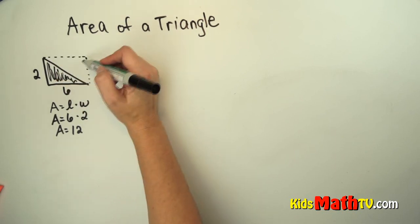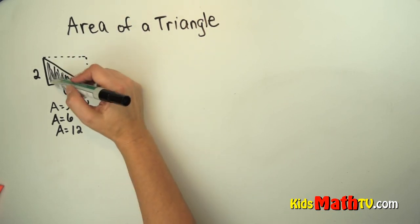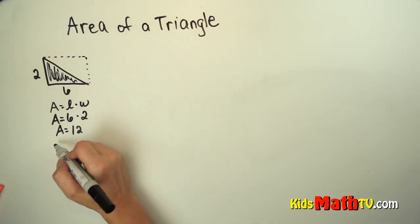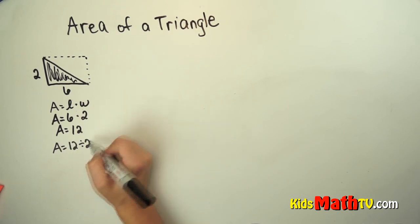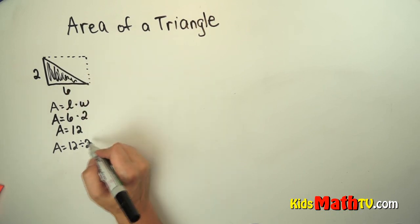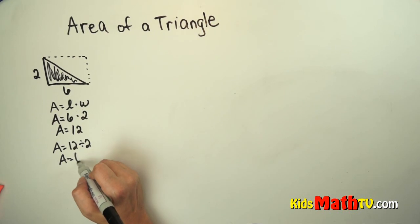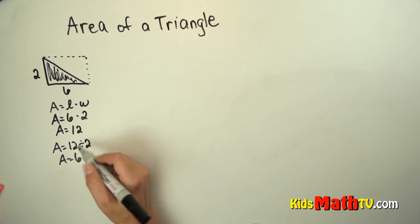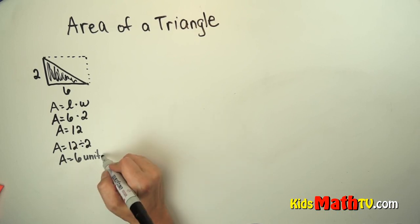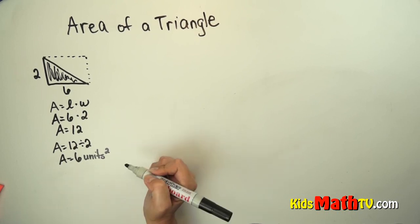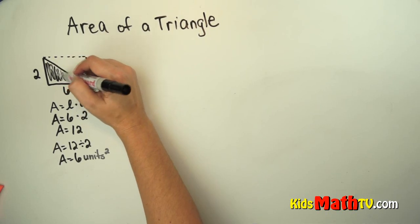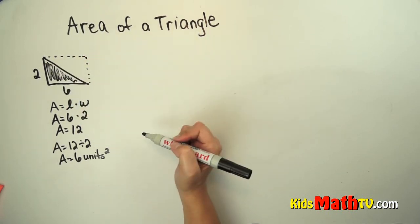But we don't want this whole rectangle, we only want this triangle. So this triangle is half of that. If we take our 12 and divide it by 2 to get 2 equal parts, the area of just this part is 12 divided by 2 which is 6 units squared. So that gives us the area of that triangle.